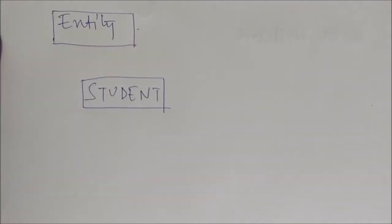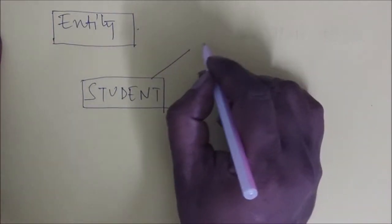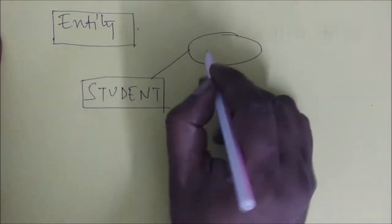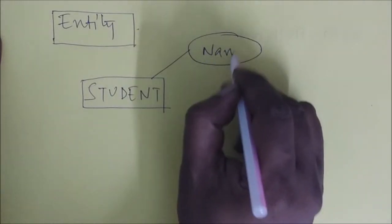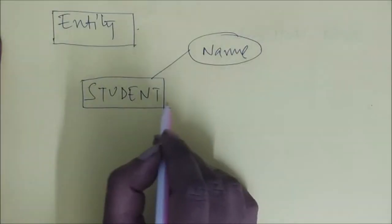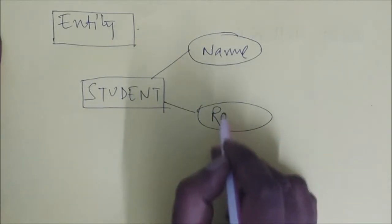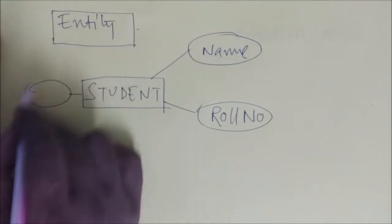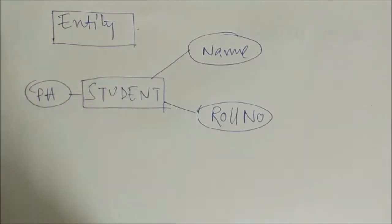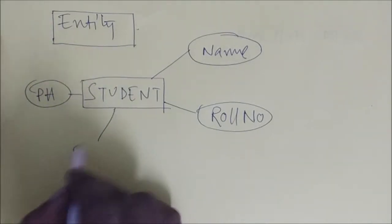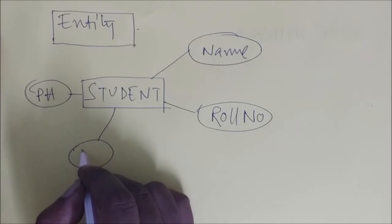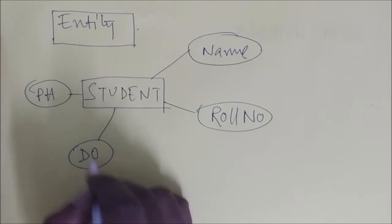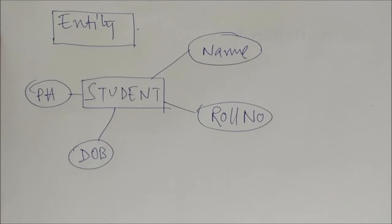If there is an entity, that entity is going to have some attributes. So for student, the attributes may be name, roll number, phone number, and date of birth.